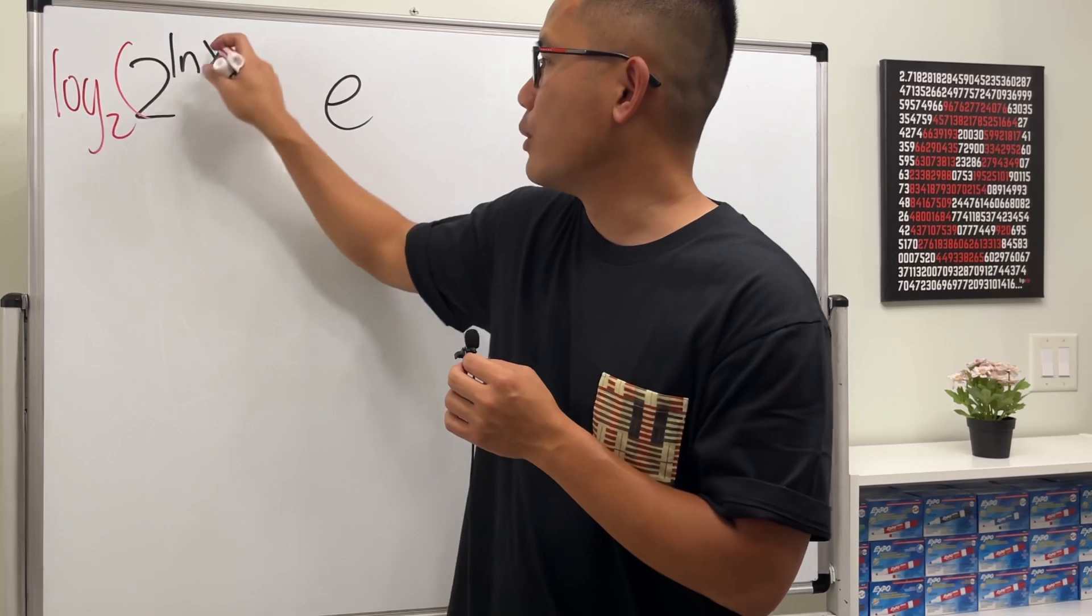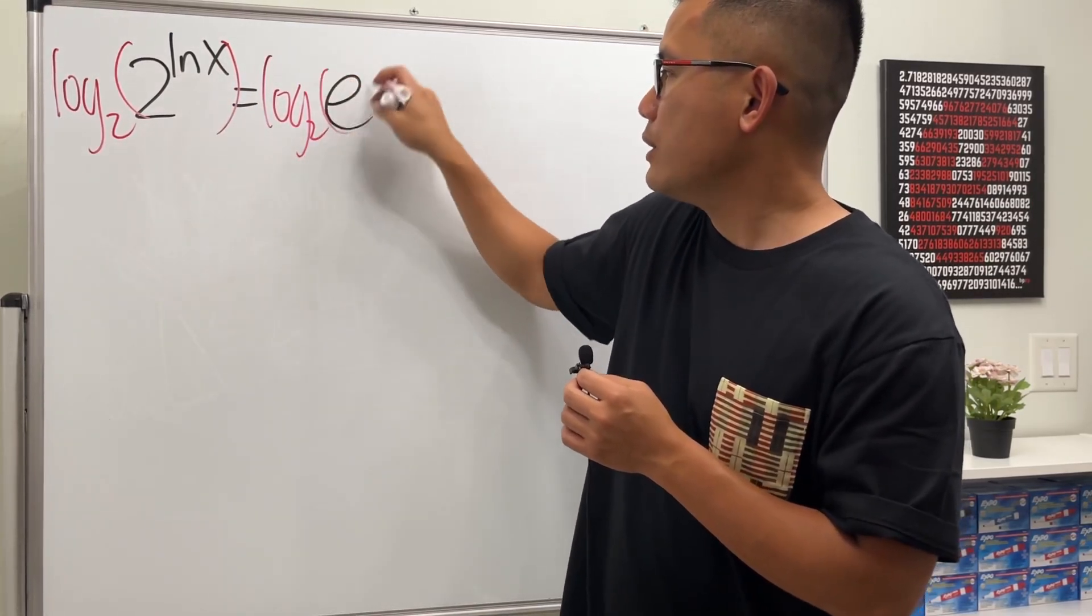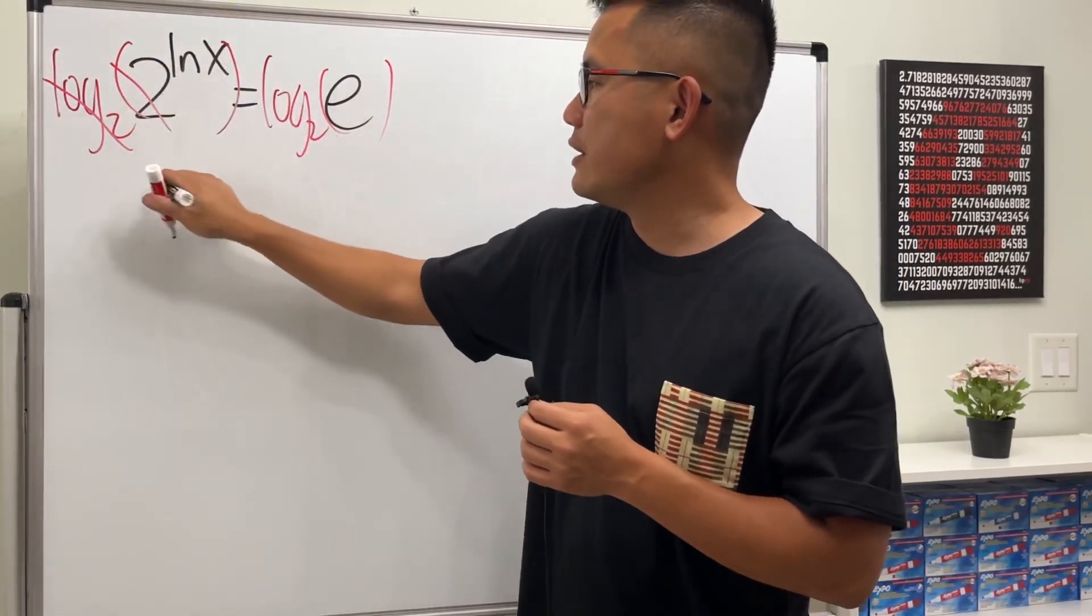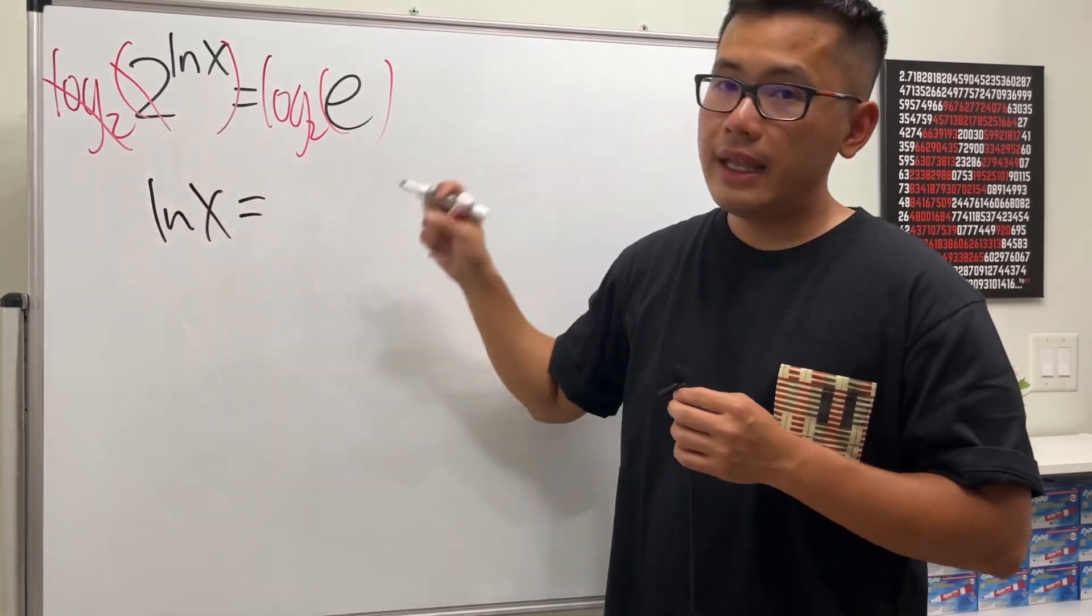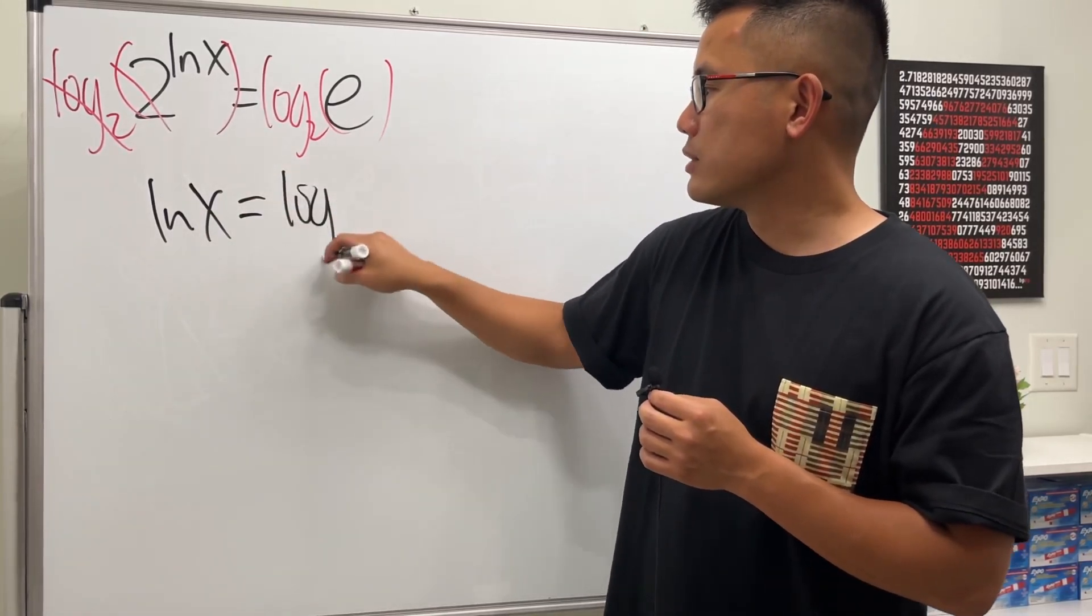We see that this and that will cancel, and we just have ln x left right here. Then this is equal to log base 2 of e.